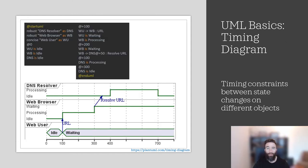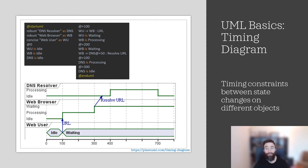Timing diagrams are the final UML diagram type that PlantUML is capable of depicting. They are another form of interaction diagram, with the focus being on timing constraints, either for a single object or a bunch of objects. This example shows timing for a DNS resolver, web browser, and the web user. It starts with the DNS resolver in an idle state because both the web browser and web user are idle. Once the web user enters a URL into the web browser, the web user changes to waiting while the web browser is processing. At the 100 time mark, the web browser attempts resolution of the URL and the DNS resolver begins processing, before finally resolving the domain name at the 700 time mark. Use timing diagrams to show timing constraints between state changes on different objects — these are particularly familiar to hardware engineers.